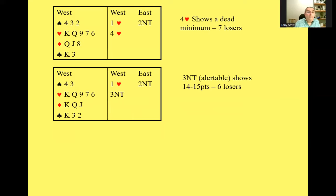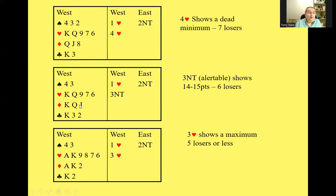The other bids are all based on showing your overall strength. This hand, for example, is a seven loser hand — it's a minimum hand, so you just show that by rebidding four hearts. The next one up: here's an example of a hand with six losers, and you show that by bidding three no trump. And then the strongest bid you can make is to rebid the major at the three level — this is an example of a five loser hand.